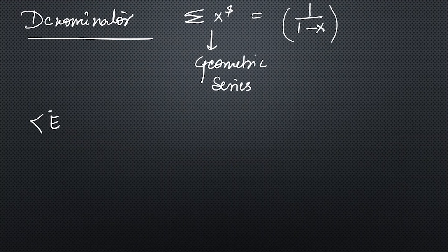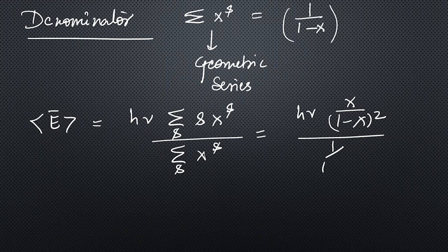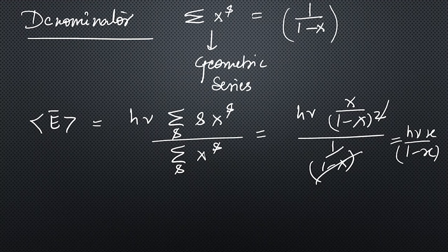Putting the numerator and denominator back into the average energy expression, we get: average energy = hμ · x/(1−x). Now substituting back the value of x = exp(−hμ/kT), the average energy expression simplifies to hμ / [exp(hμ/kT) − 1].